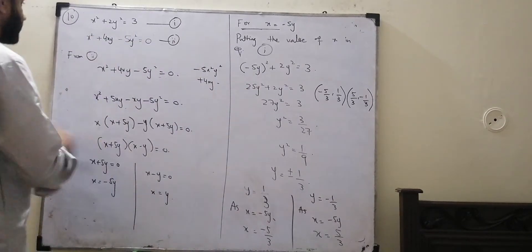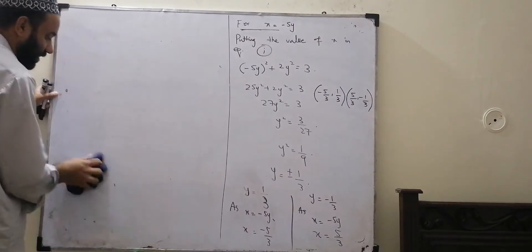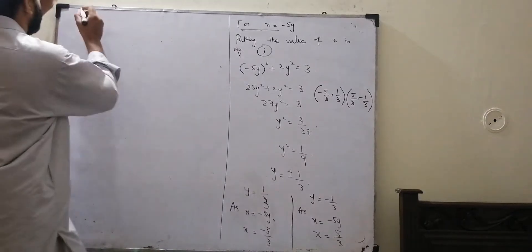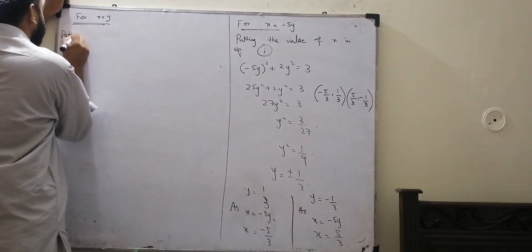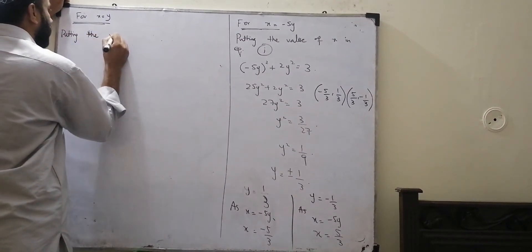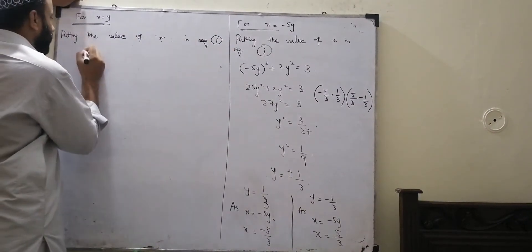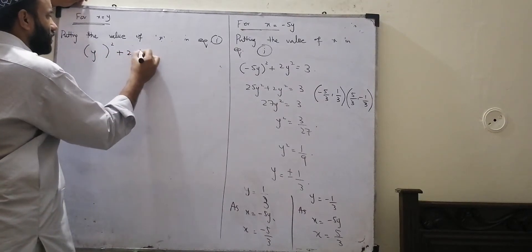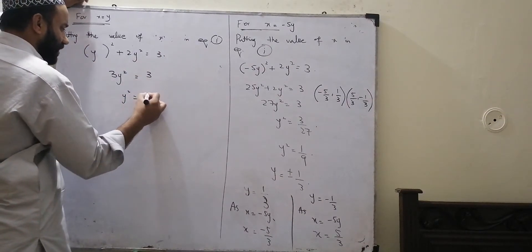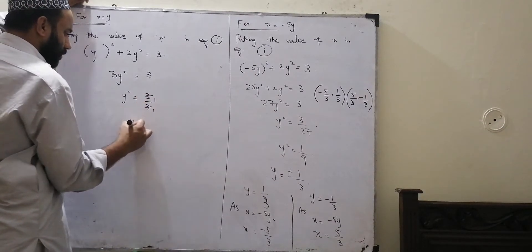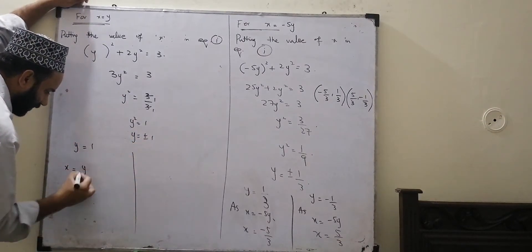Now we have to do the second part. For x is equal to y, putting the value of x into equation number one, we get y squared plus 2y squared is equal to 3. So 3y squared is equal to 3, which gives y squared is equal to 1.